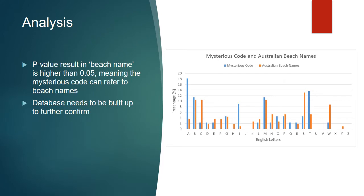We found that for Australian beach names the correlation was a bit better. The p-value was higher than 0.05, suggesting it could possibly be Australian beach names, but we need a bigger database to confirm this.